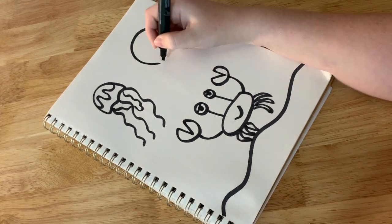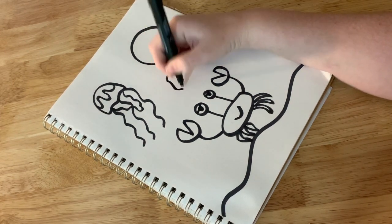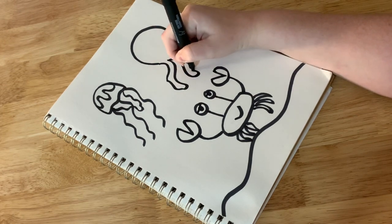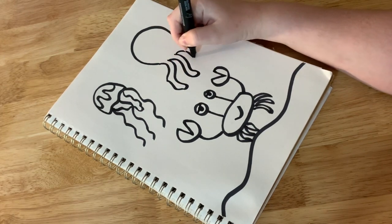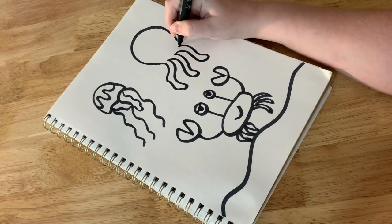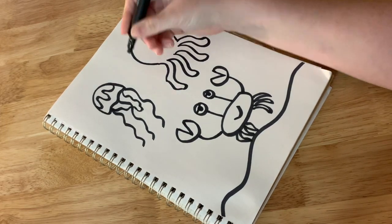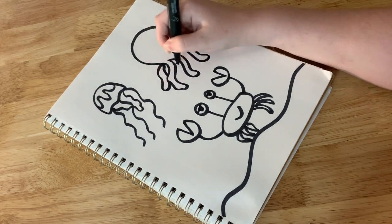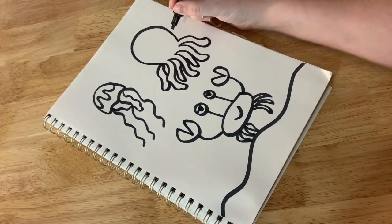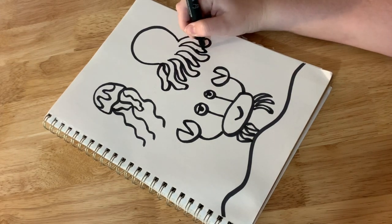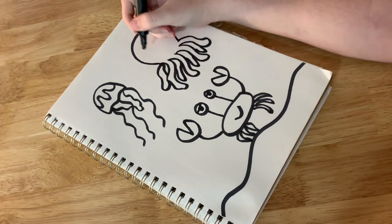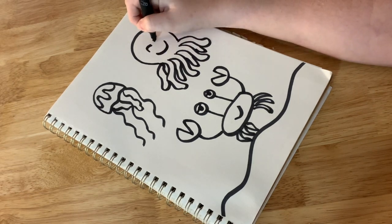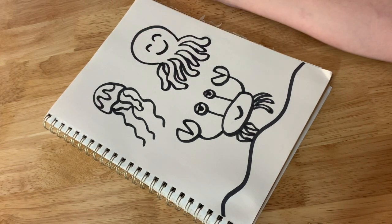So we're gonna give our octopus eight wavy legs like this. Kind of like our jellyfish but thicker. I'm gonna do four on the front and then four behind these right here. Just kind of work them in there. There we go. Then I'm gonna make it a very happy octopus just like that.